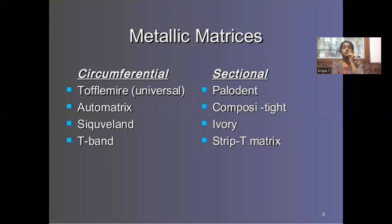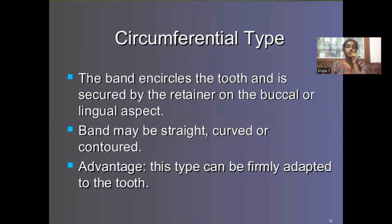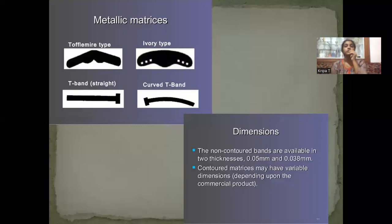Metallic matrices can either be circumferential or sectional. Sectional ones include Palodent, Composite Tight, Tripleband, and so on. The circumferential type is the band that encircles the tooth and is secured by the retainer on the buccal or lingual aspect. The band may be straight, curved, or contoured. The advantage is that they can be firmly adapted to the tooth. Non-contoured bands should be available in thickness of 0.05 mm and 0.038 mm.